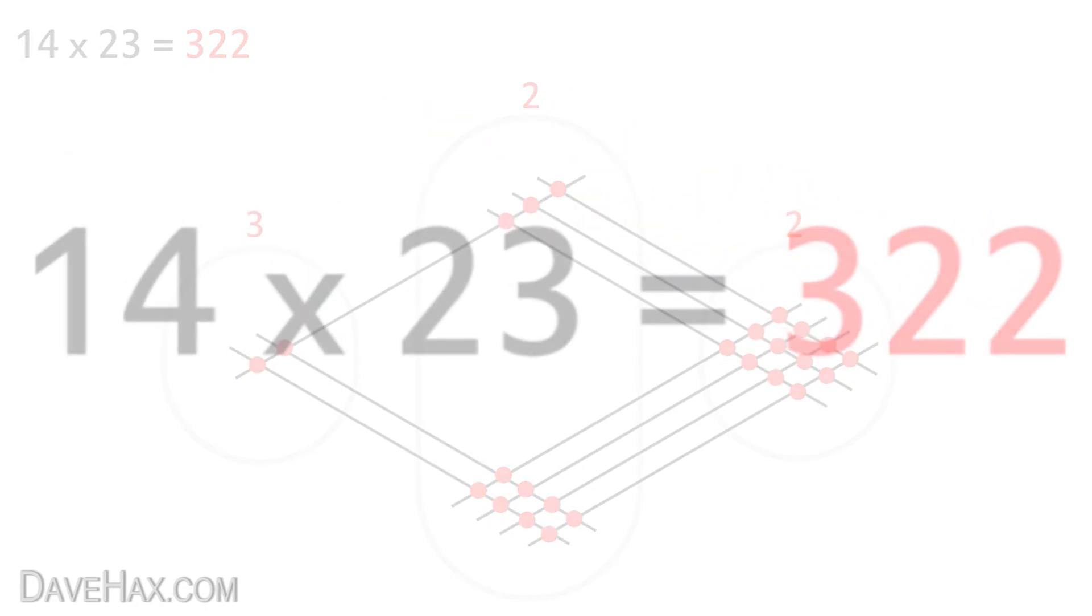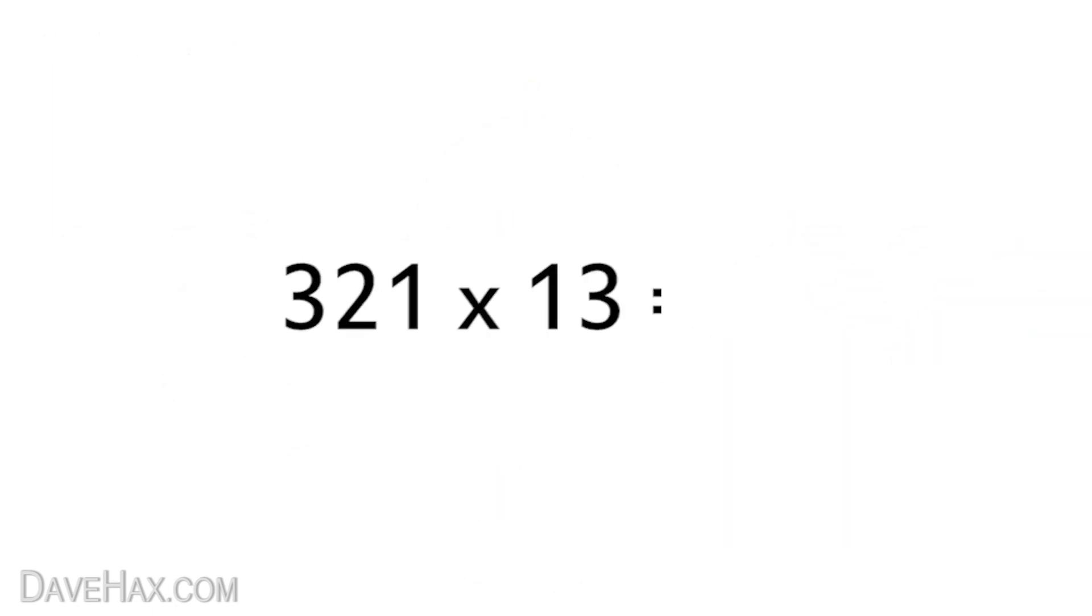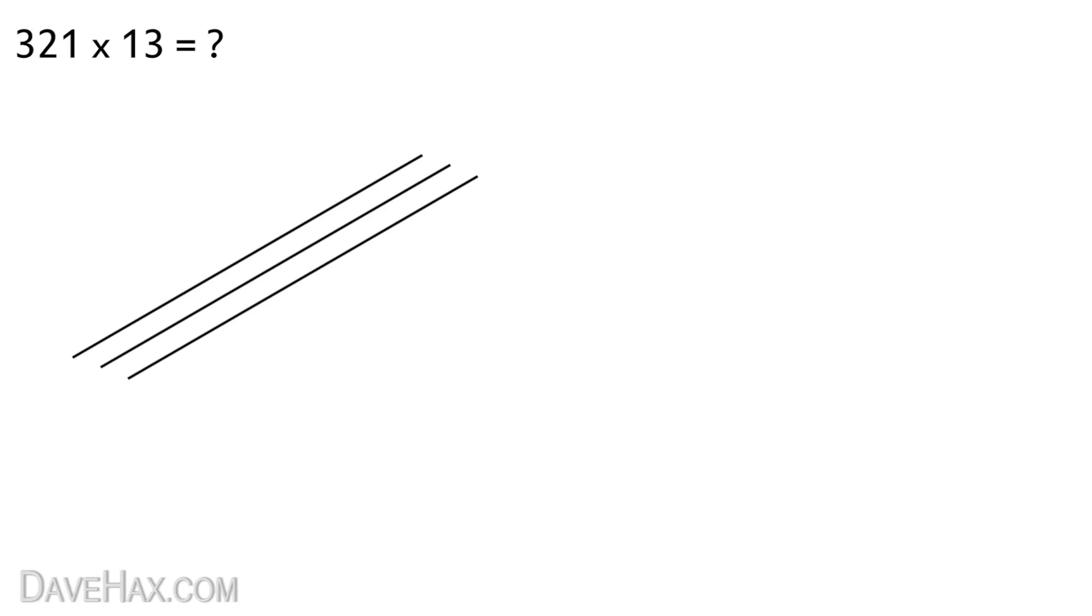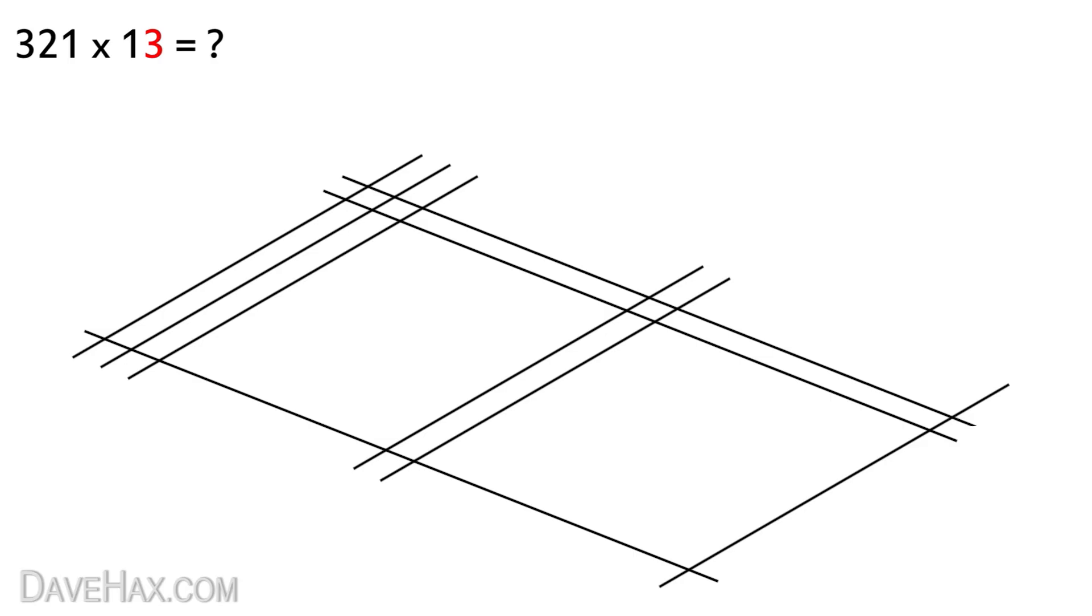We'll now go one step further and look at multiplying even larger numbers. So the first number we have now is a 3 digit number. Start by drawing out the lines for the first digit. Leave a space then do the lines for the second digit. Then leave another space and do the lines for the last digit. Next we have a multiplication symbol then we draw out the lines for the next number. Once we've drawn out the pattern we'll mark out the zones. This time as you can see there'll actually be 4 zones.